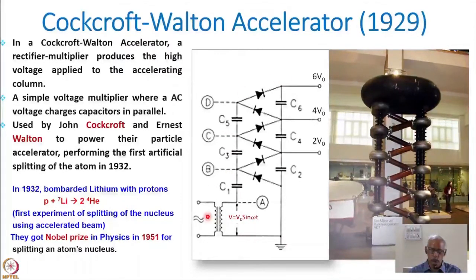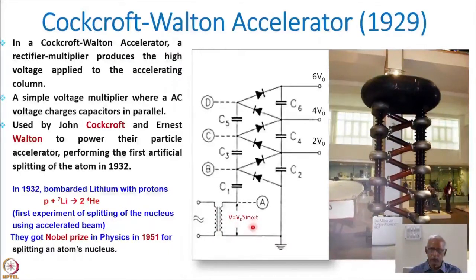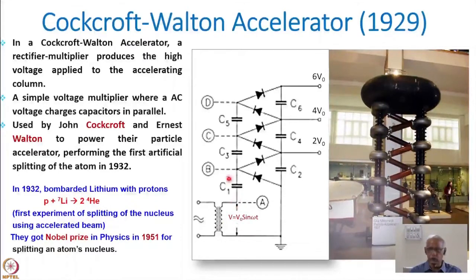You can see the configuration here: there is a transformer where AC voltage is applied, and across this you get a voltage V = V₀ sin(ωt). So this AC voltage has a frequency ω and it's a sinusoidal wave. In the subsequent slides you will see how the system works.